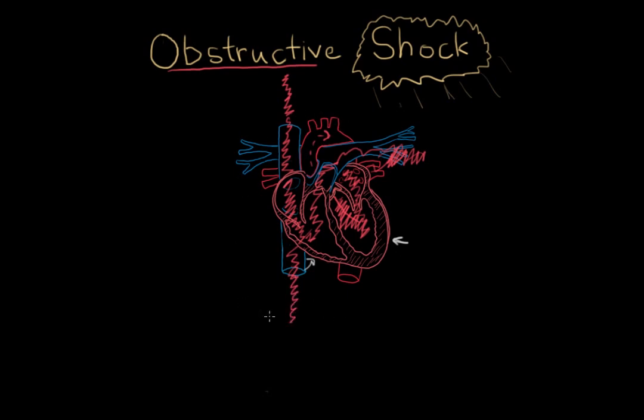This total swelling throughout the body is known as anasarca. So pulmonary edema, cardiomegaly, jugular venous distension, and anasarca, total body swelling, can all result from obstructive as well as cardiogenic shock. It's all signs of fluid overload.